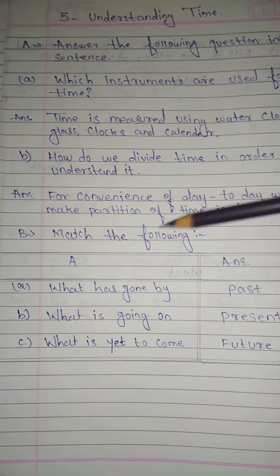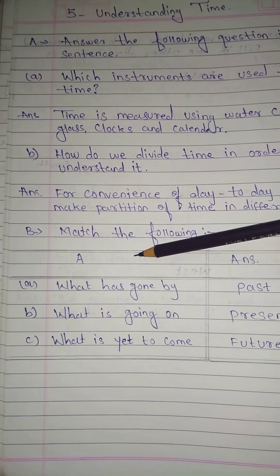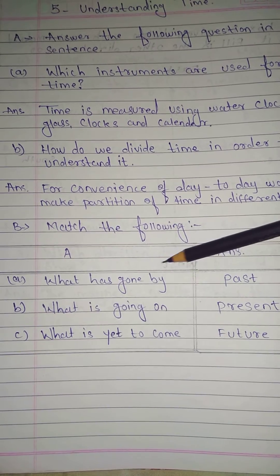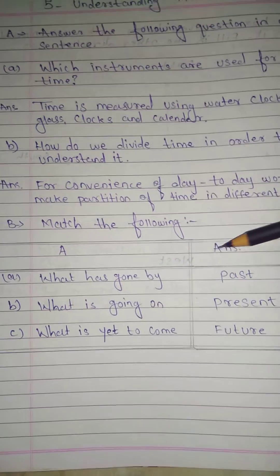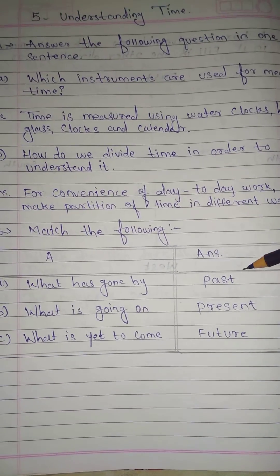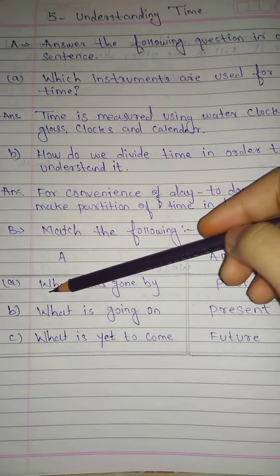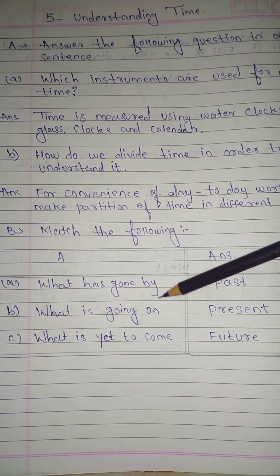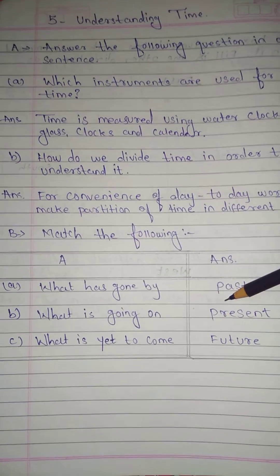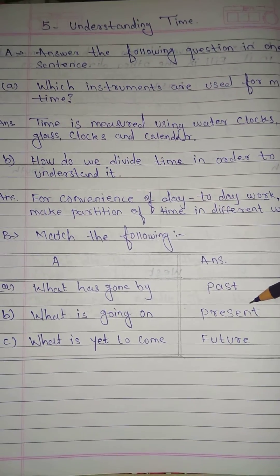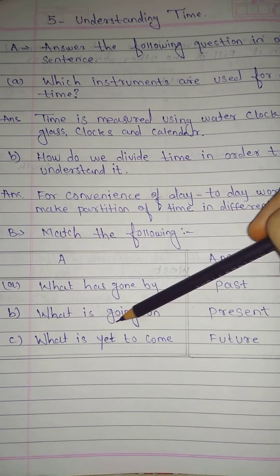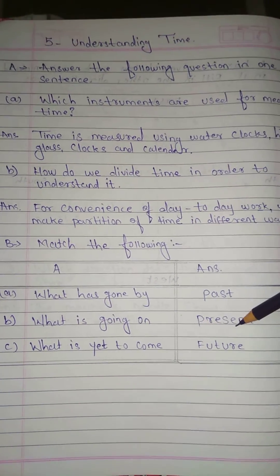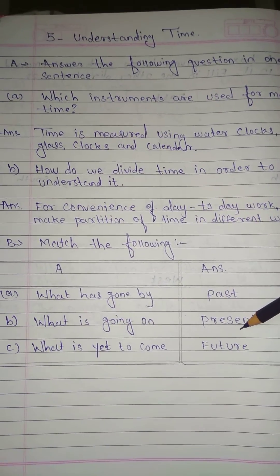B. Match the following. A. What has gone by? Answer: Past. B. What is going on? Answer: Present. C. What is yet to come? Answer: Future.